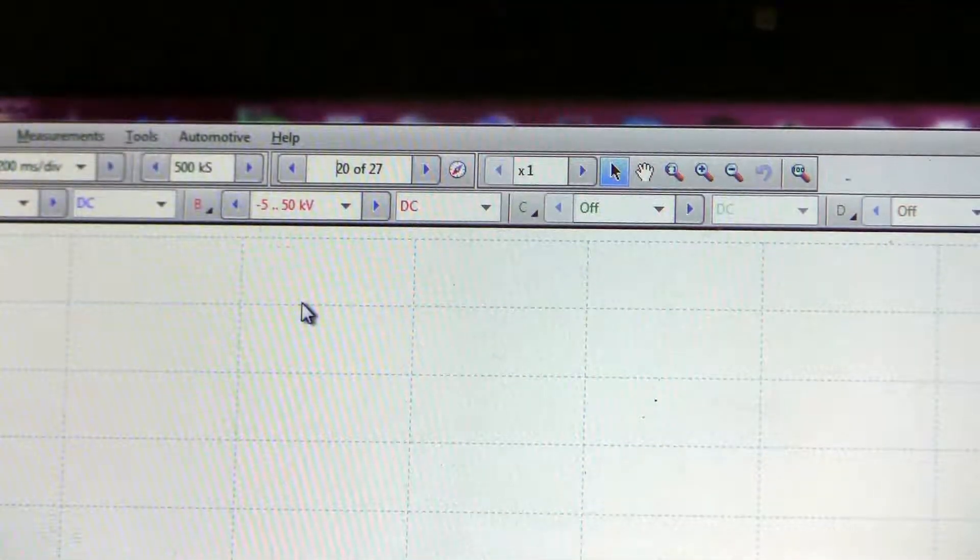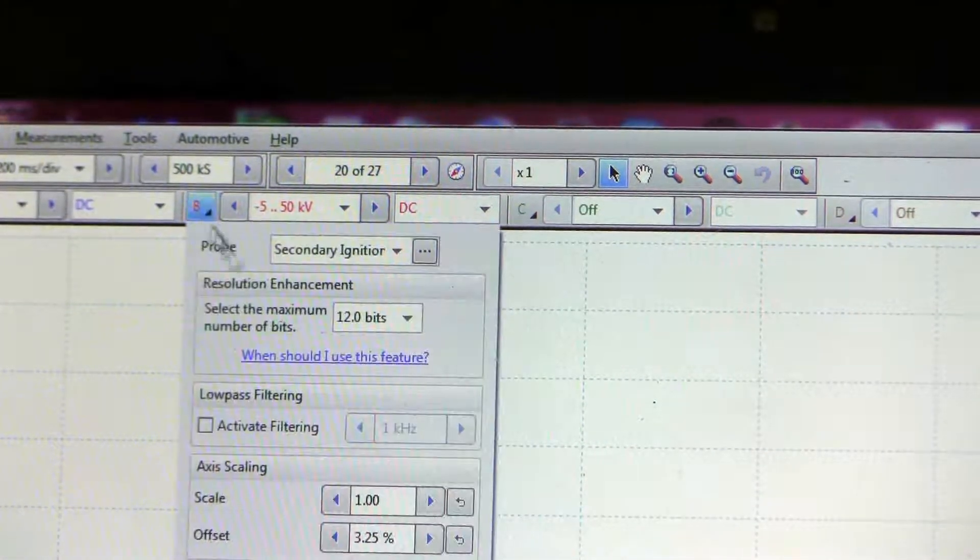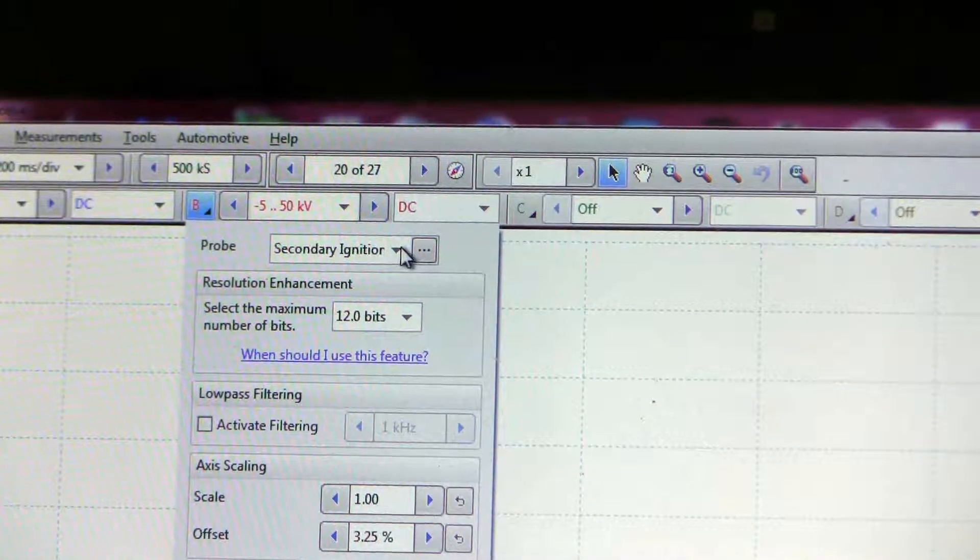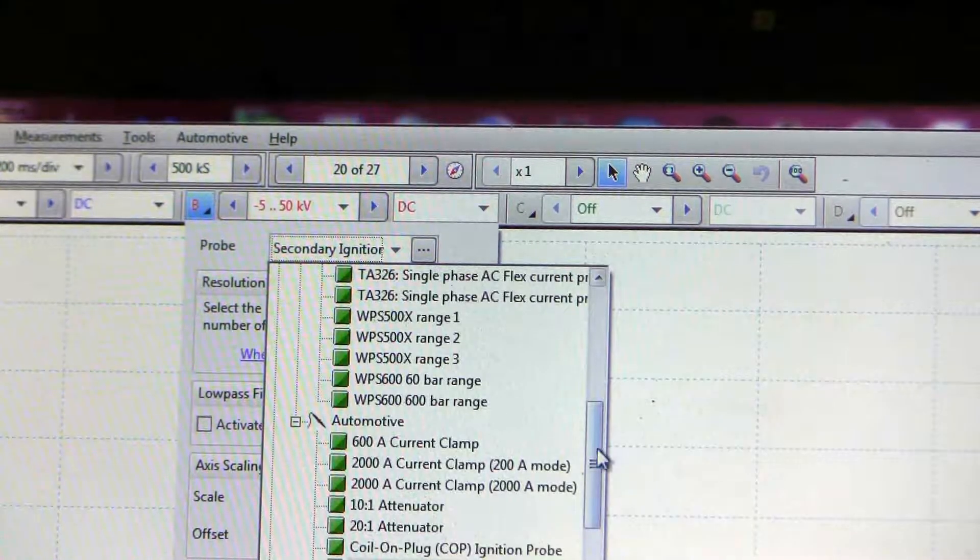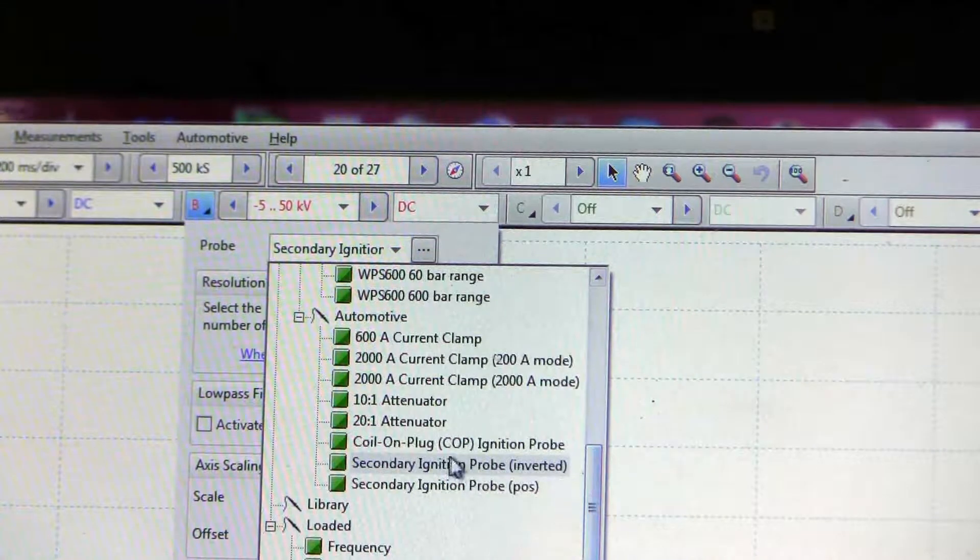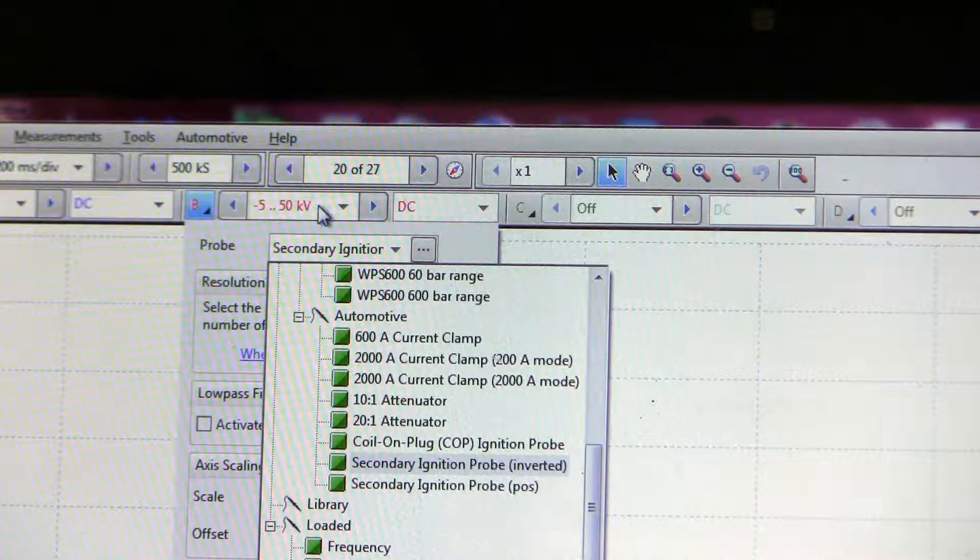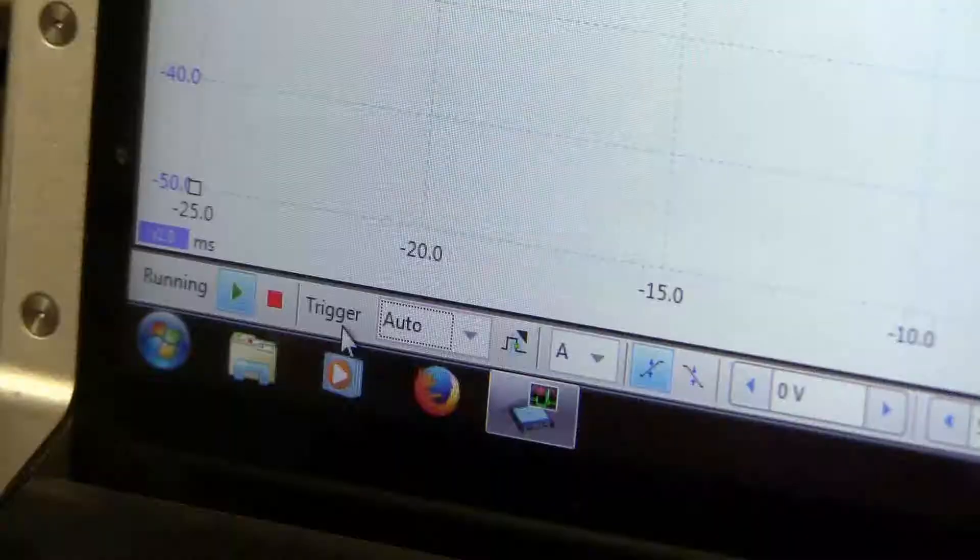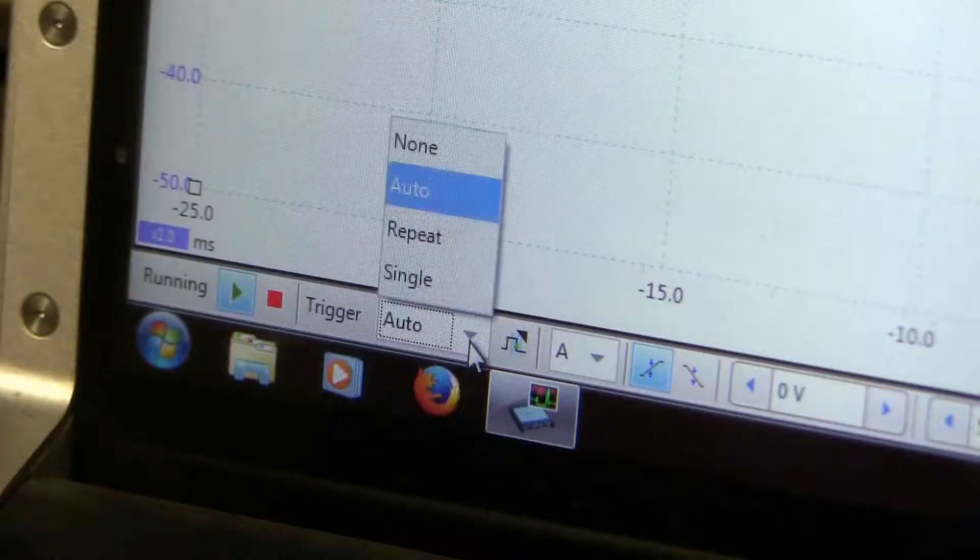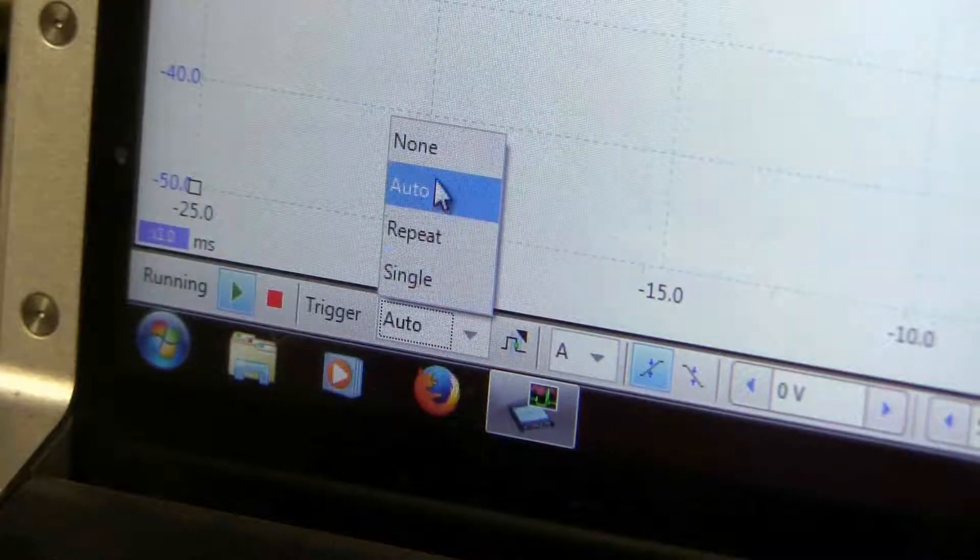Now to set up channel B, I've chosen the secondary igniter, this one right here, secondary ignition probe inverted, and make sure you turn it on. And down here I've chosen to trigger with none so that the screens roll through and I can pick out the best one later.